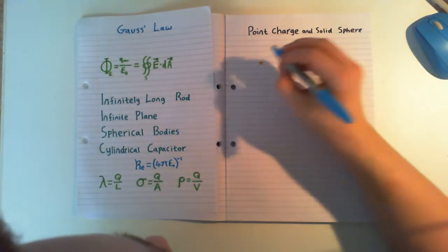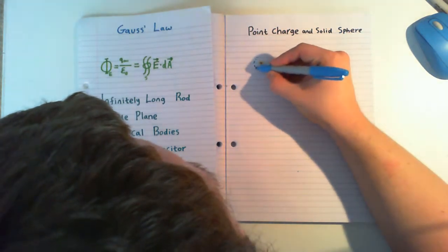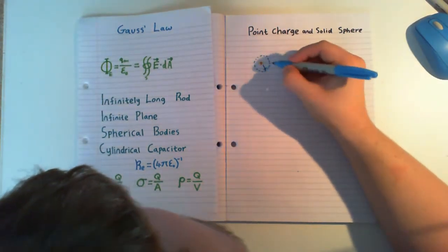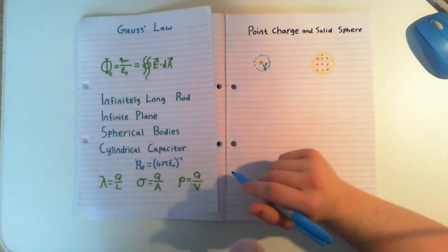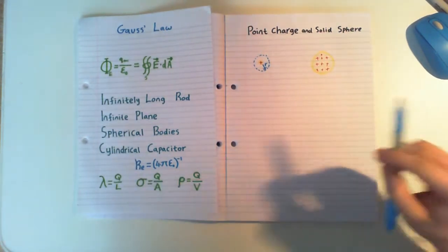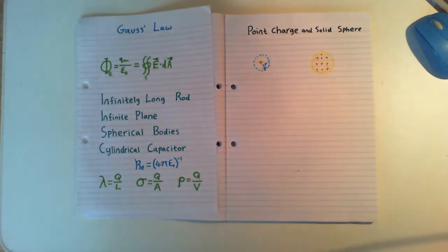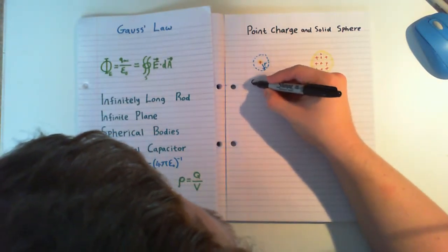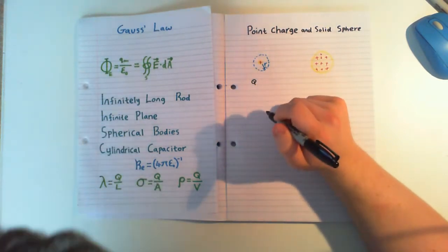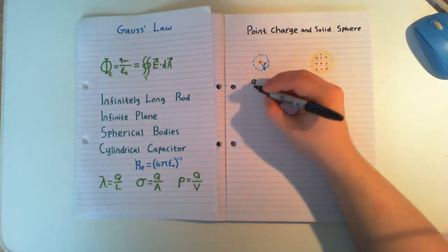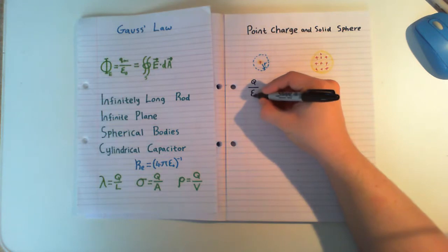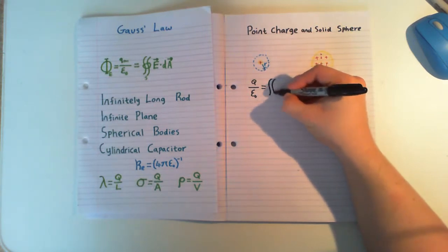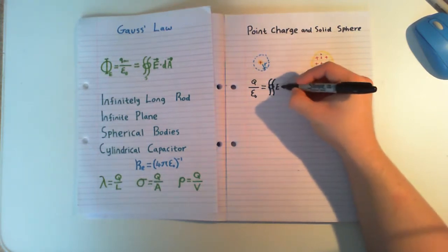We'll do what we did in all of our previous videos and draw a Gaussian surface. For this one, our Gaussian surface is just going to be a sphere with some distance r coming from our point charge. Then we'll use our integral. Our Q enclosed, which is equal to our integral, is just Q — all of the charge which exists is enclosed — and this is all over epsilon naught, and this is equal to our integral of E dot dA.